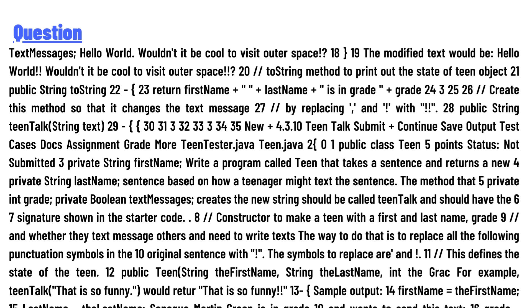This revises the state of the Teen. Public Teen, string firstName, string lastName, int grade. For example, teenTalk of 'that is so funny' would return 'that is so funny'. Sample output: first name, last name. Sonica Martin Green is in grade 10 and wants to send this text. Enter the text message: 'hello world would not it be cool to visit outer space'.